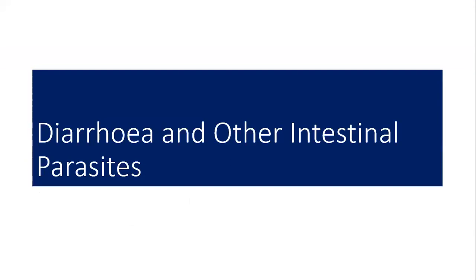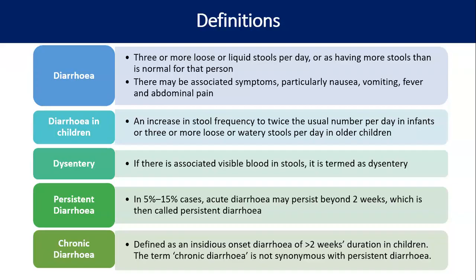Coming to diarrheal disorders and other intestinal parasites. Diarrhea is defined as three or more loose or watery stools per day, or more stools than is normal for that person, with possible associated symptoms like nausea, vomiting, fever, and abdominal pain. In children, an increase in stool frequency more than twice normal, or three or more loose stools in older children, is considered diarrhea. Visible blood in stool is called dysentery. Persistent diarrhea means acute onset persisting beyond two weeks; chronic diarrhea means insidious onset lasting more than two weeks.